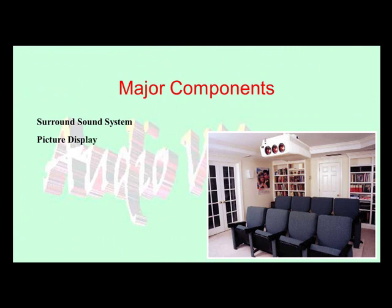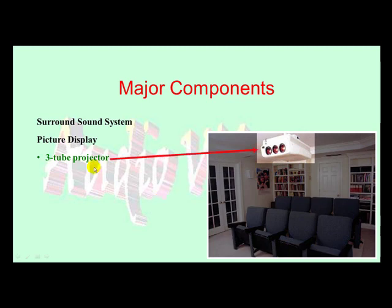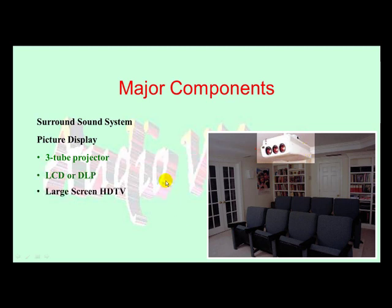This is slide three. Our purpose in this exercise is that we have major components — surround sound system and picture display. We start off with the regular image you're given, then we feature the three-tube projector with an arrow pointing to it. Notice how everything else is darkened — we darkened this image in GIMP, then took the regular image, cut the projector from it, and pasted it onto the darkened image lined up nicely.